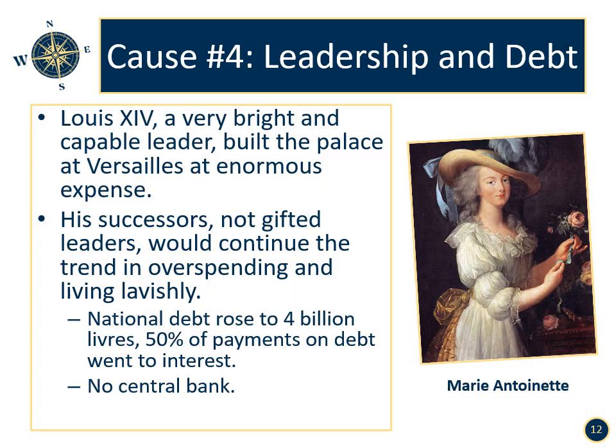Cause number four: leadership and debt. Louis XIV was a very bright and capable leader and built the palace at Versailles, although at an enormous expense. His successors were not gifted leaders and would continue the trend of overspending and living lavishly. The national debt rose to four billion livres. Fifty percent of payments on debt were to interest alone, and there was no central bank. Marie Antoinette, the wife of Louis XVI, would spend lavishly at Versailles and was later given the nickname Madame Deficit. Louis XVI was not a horrible person, just not a strong leader, nor did he understand the plight of the average French person.